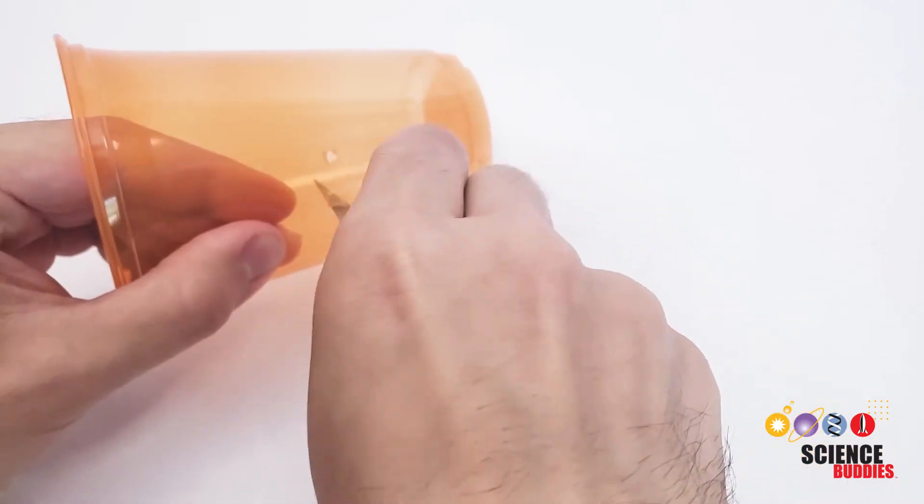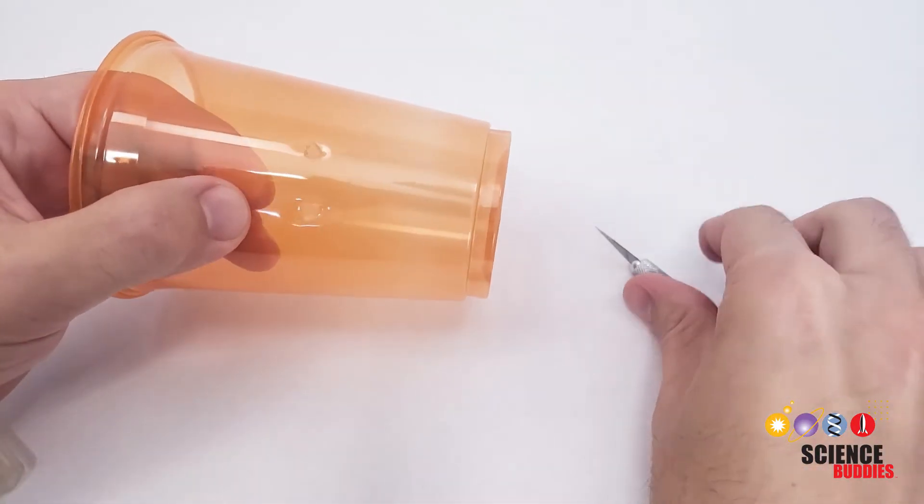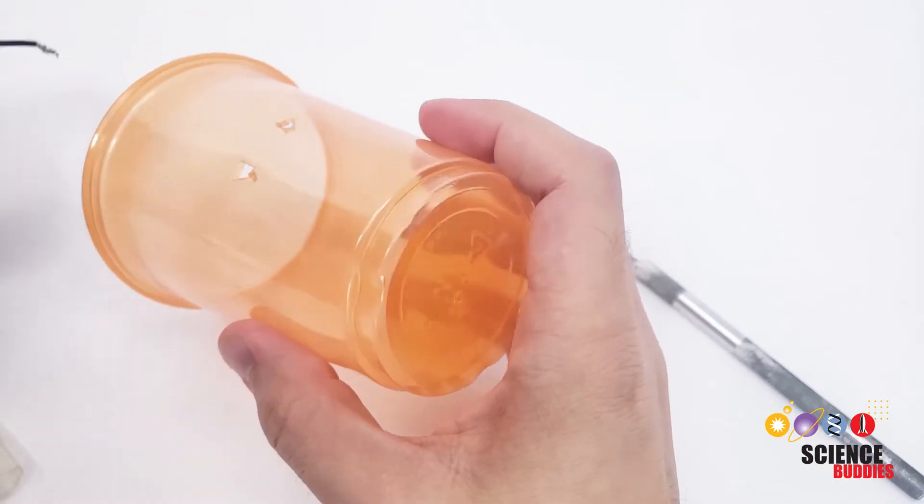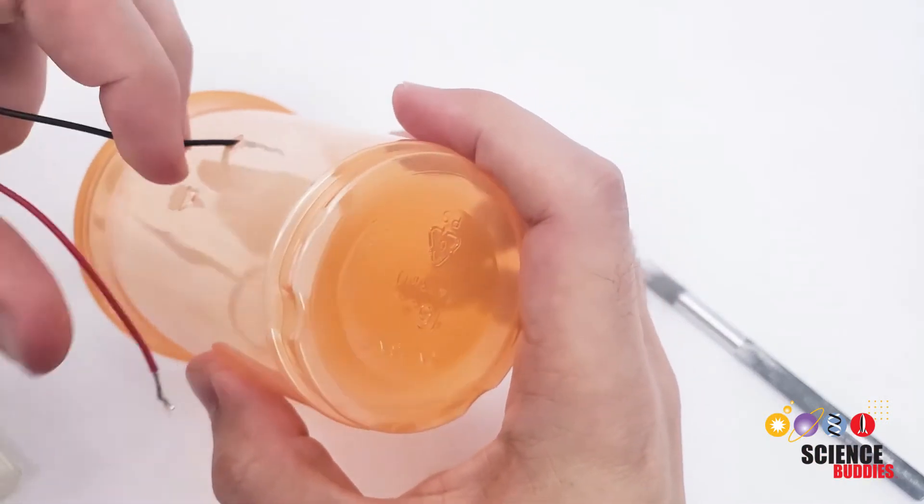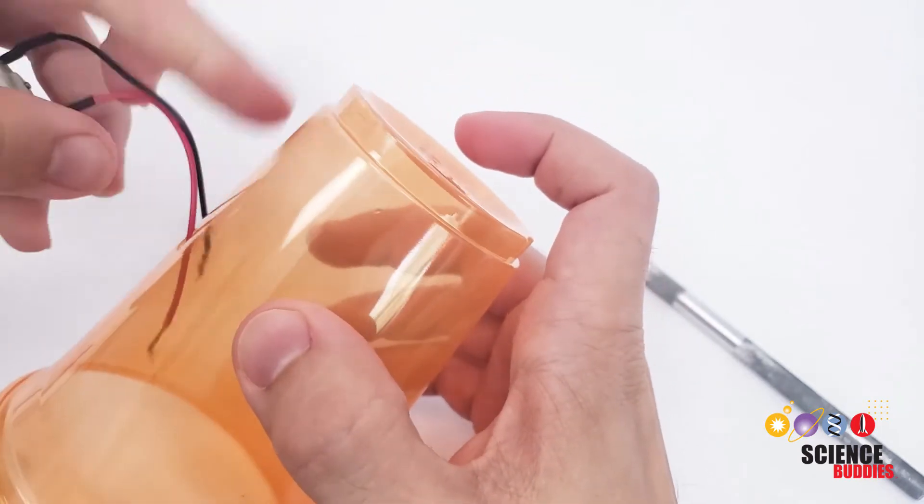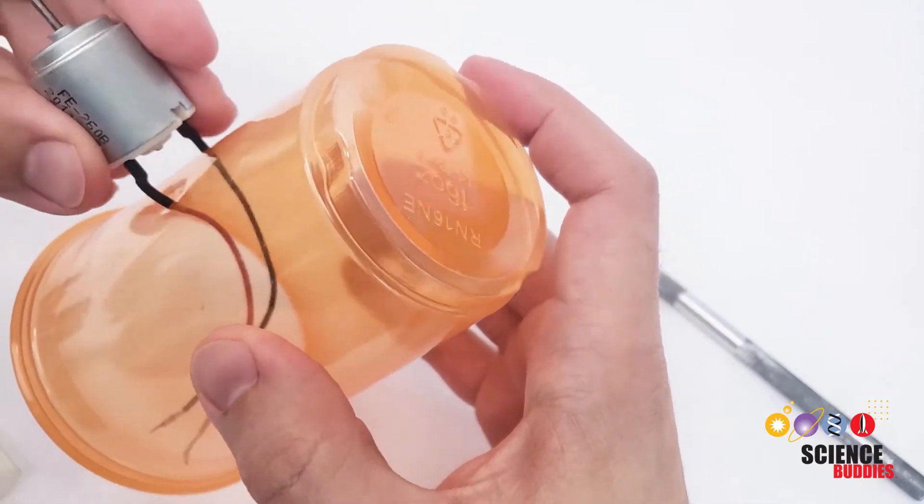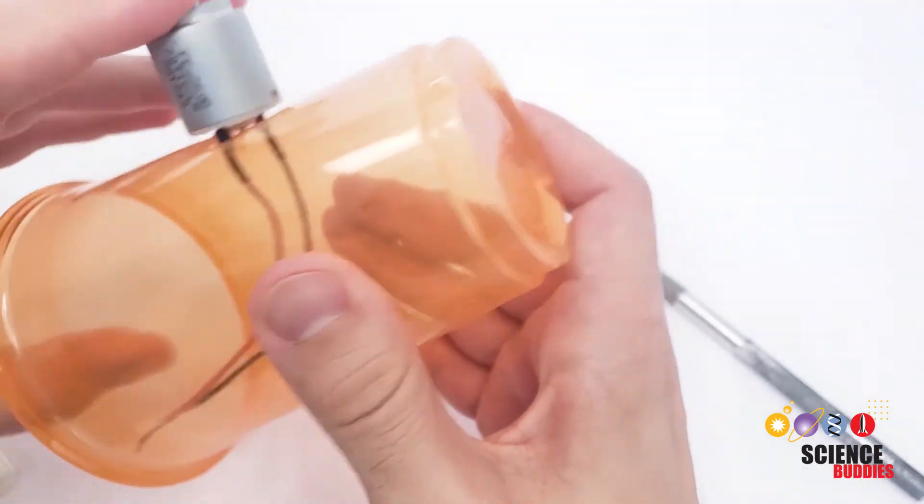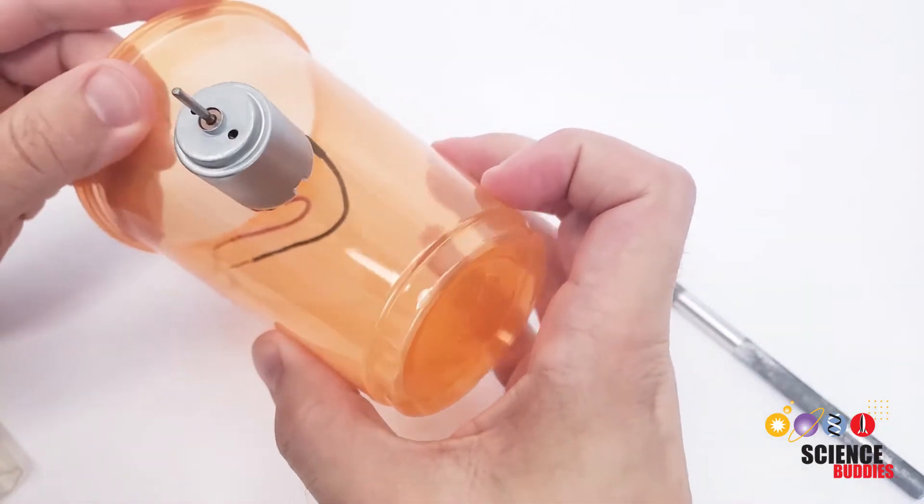And again, twist to widen the hole. Once you've done that for both holes, you should be able to take the wires from your motor and feed them through the holes into the inside of the cup and have the motor sit, not perfectly flat, but roughly on the outer face of the cup like this.